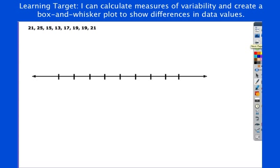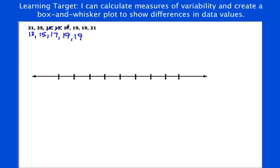So let's walk through what that looks like. We've got this data set right here. So let's put it in order. Here we have 13, 15. Cross off as you go. 17, 19, 19, 21, 21, 25. Let's count: 1, 2, 3, 4, 5, 6, 7, 8. 1, 2, 3, 4, 5, 6, 7, 8.